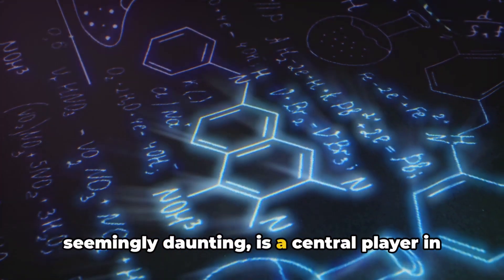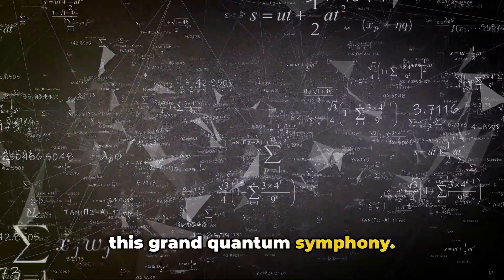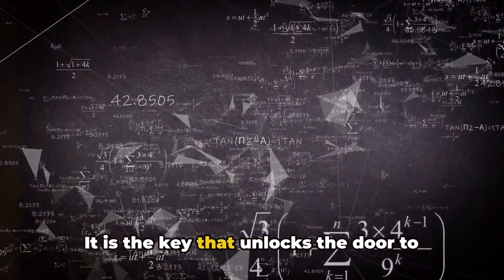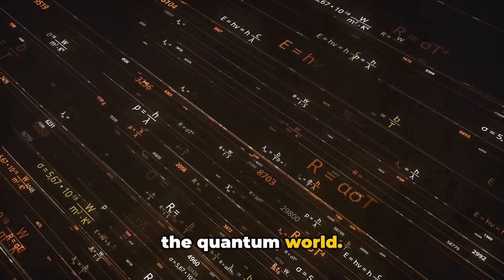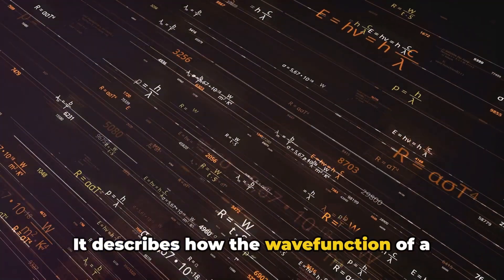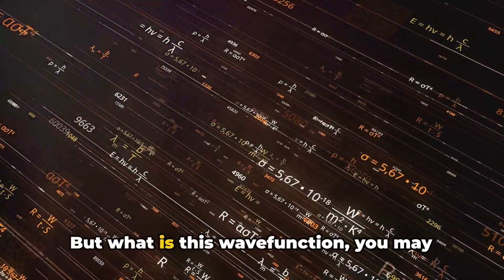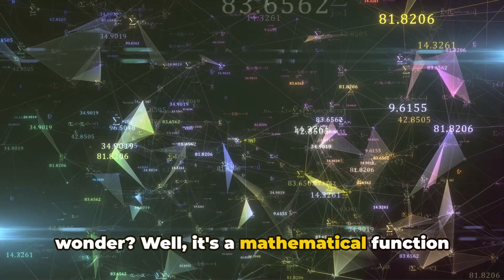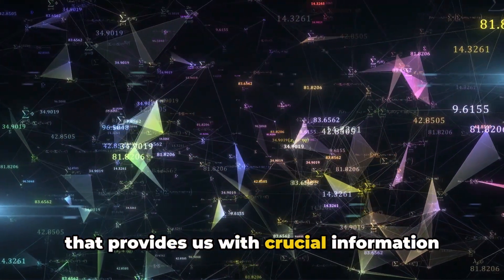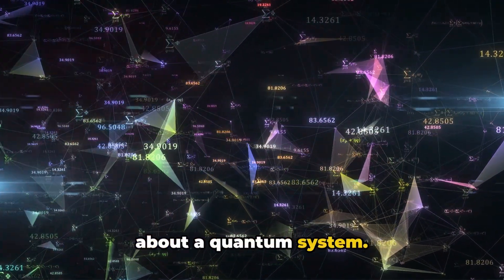Schrödinger's equation, although seemingly daunting, is a central player in this grand quantum symphony. It is the key that unlocks the door to the quantum world. It describes how the wave function of a quantum system evolves over time. But what is this wave function, you may wonder? Well, it's a mathematical function that provides us with crucial information about a quantum system.